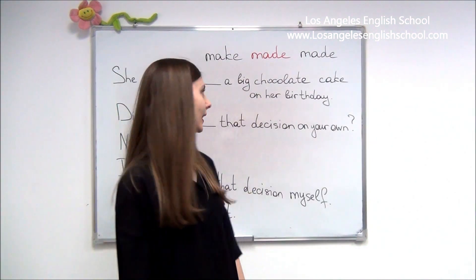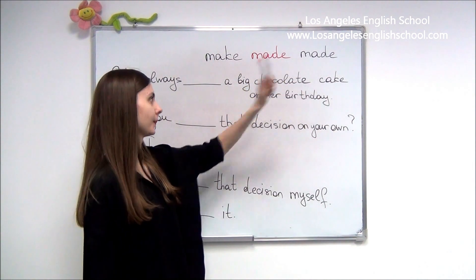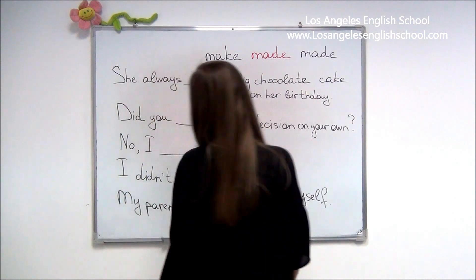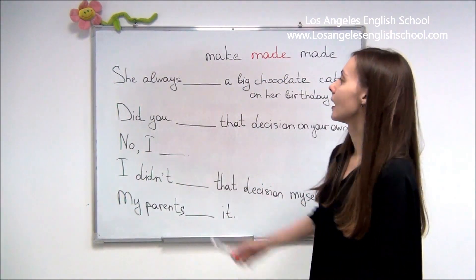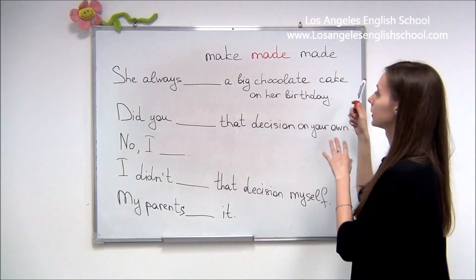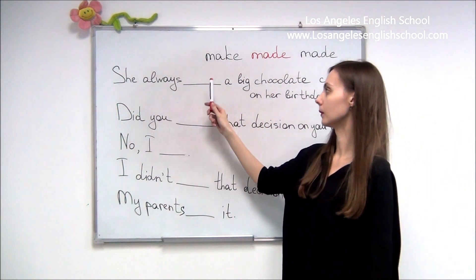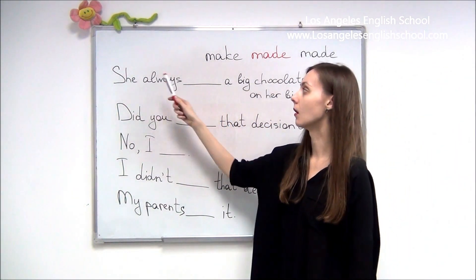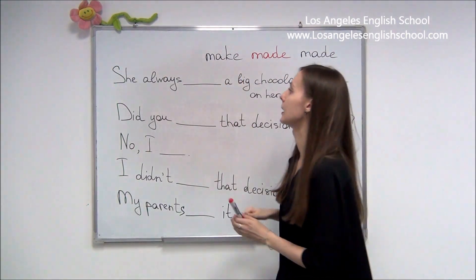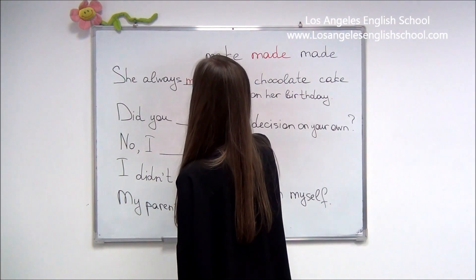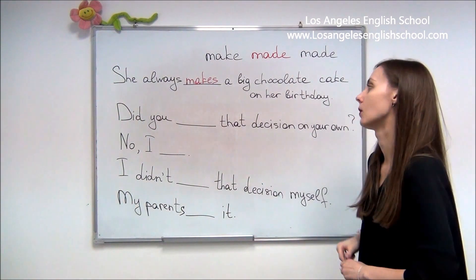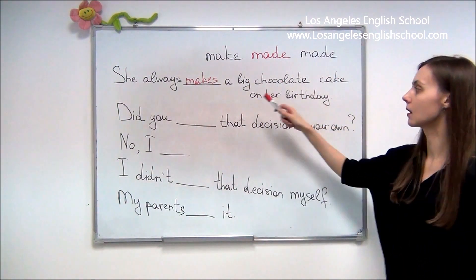Our last verb for today is make, made, made. Let's review the present simple a little to compare present and past. 'She always makes a big chocolate cake on her birthday.' Pay attention to 'always' — this is present simple. Don't forget to add 's' for she, he, it: she always makes.